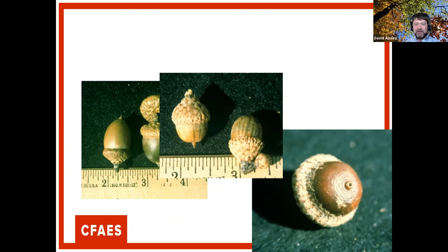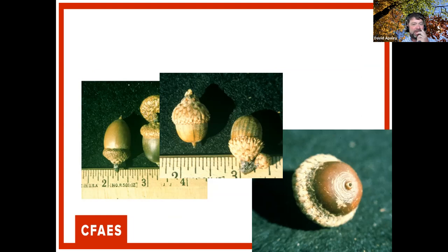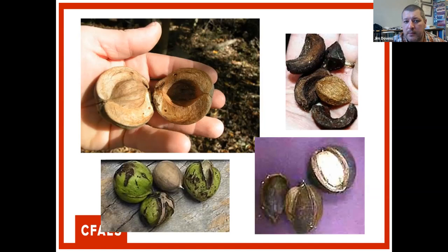Red oak group acorns: northern red oak has a barrel-shaped acorn with a shallow cap like a beret. Black oak has a fairly small acorn, often watermelon-streaked, with a fringed cap. Scarlet oak uniquely has concentric rings around the base of the acorn tip — the only oak Dave knows of with this consistent feature. Scarlet and black oak acorns are about the same size; scarlet oak is a dry-site species in southeast Ohio.